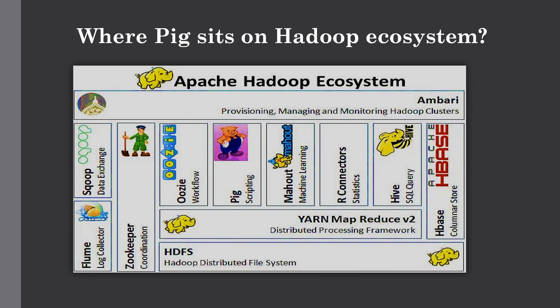In upcoming lectures, we'll compare using MapReduce versus using the Tez execution engine for both Hive and Pig. The DAG concept used by Tez is also used in Apache Spark for faster computation. Simply put, Pig sits on top of MapReduce as well as Tez to process your data — converting the Pig script into a MapReduce or Tez job, which computes data on your Hadoop cluster using YARN for resource allocation and HDFS for storage.